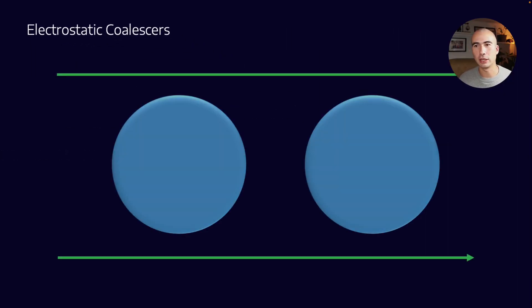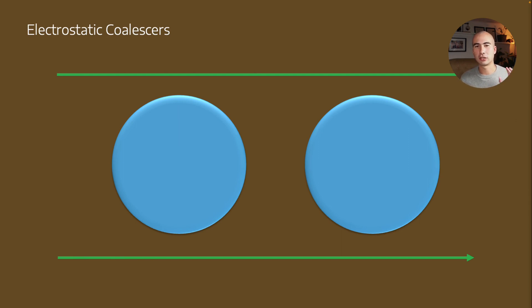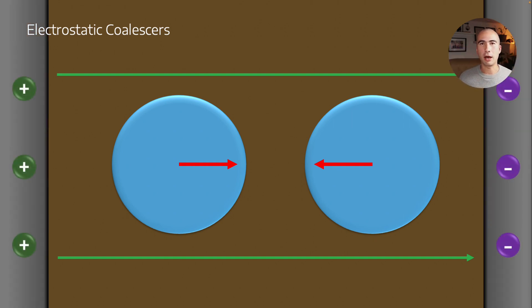Now let's move on to electrostatic coalescers. These operate on a slightly different principle. Effectively, what happens is, I want to move these two water droplets closer to each other. So one of the ways that we can do that is by applying an electric field across these materials.